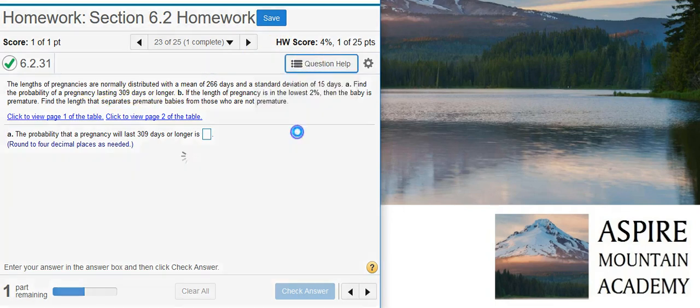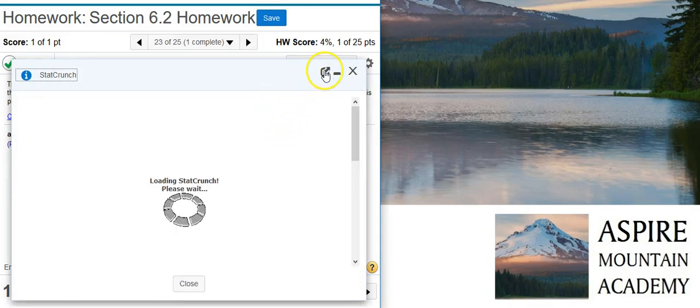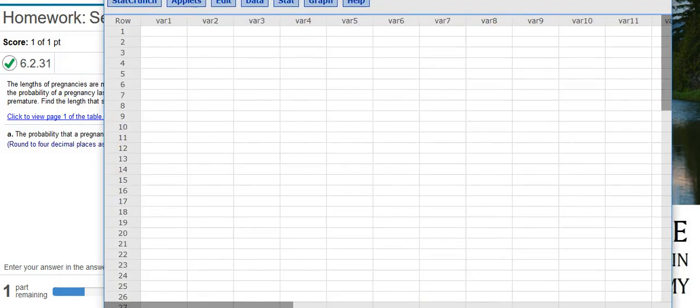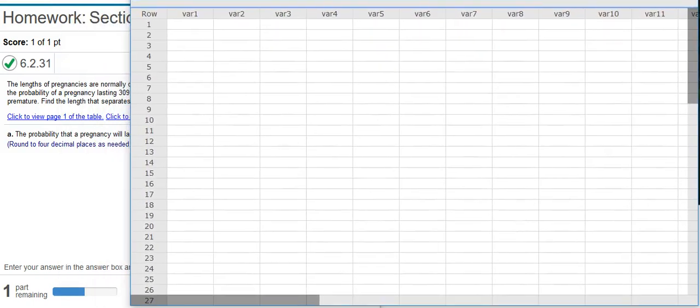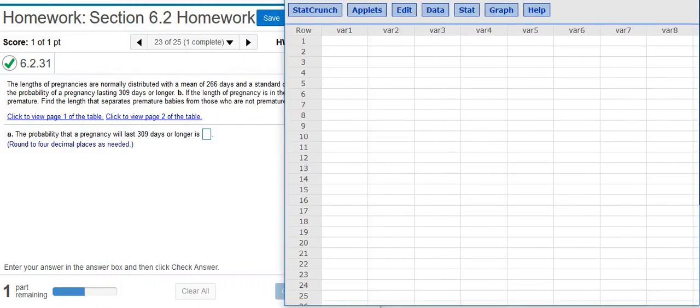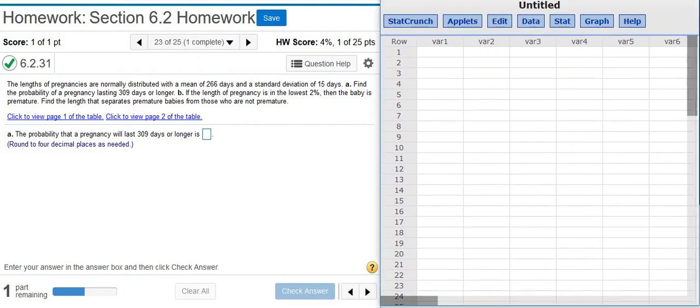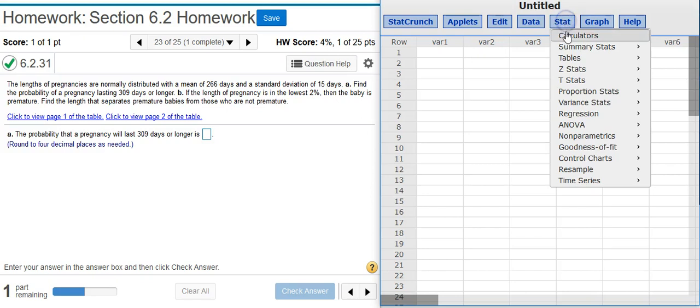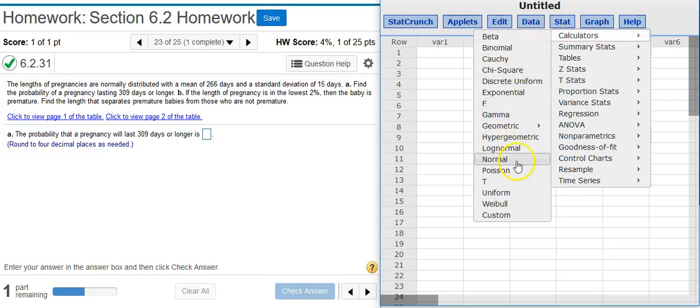The first thing I need to do is open up StatCrunch and let's resize this window so we can see everything a little bit better. Now in StatCrunch, I go to Stat, Calculators, Normal.